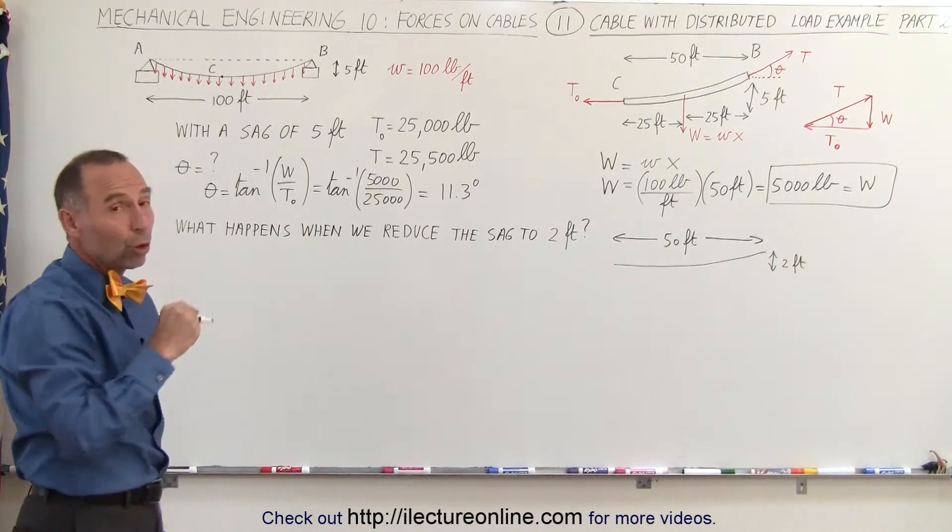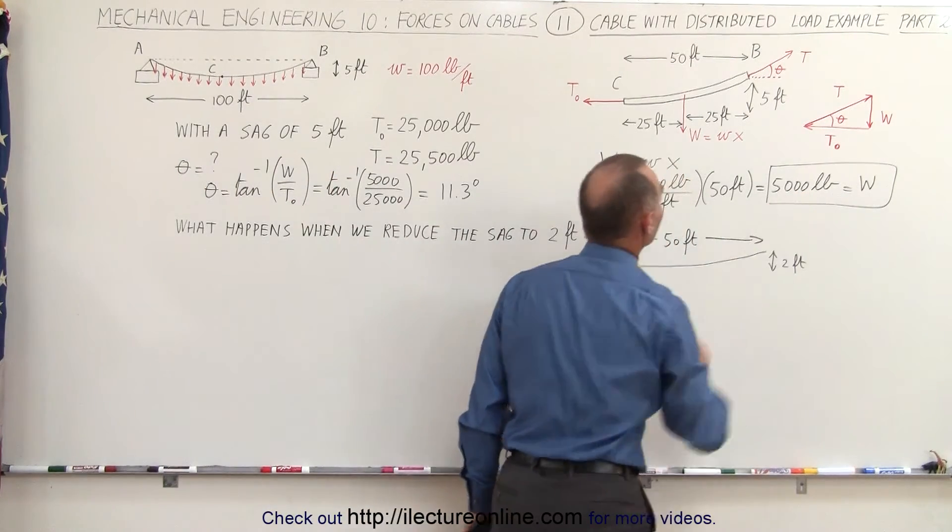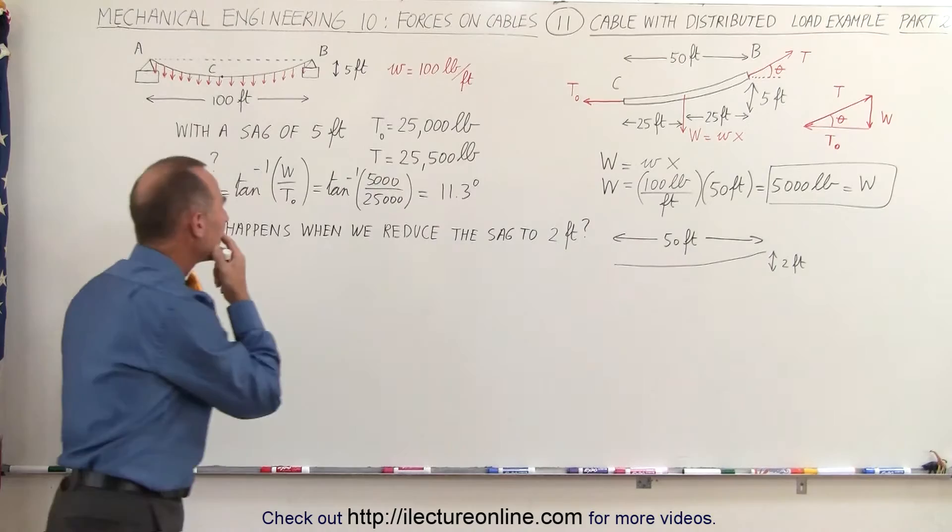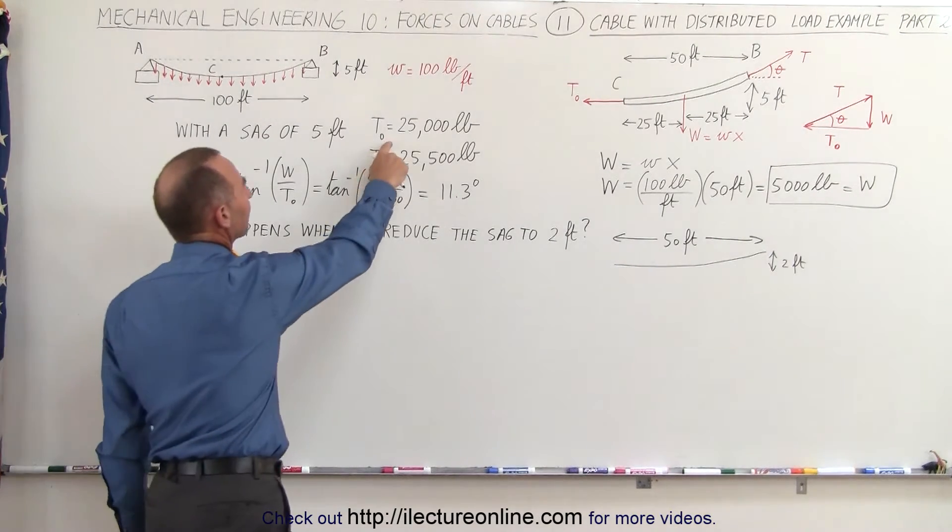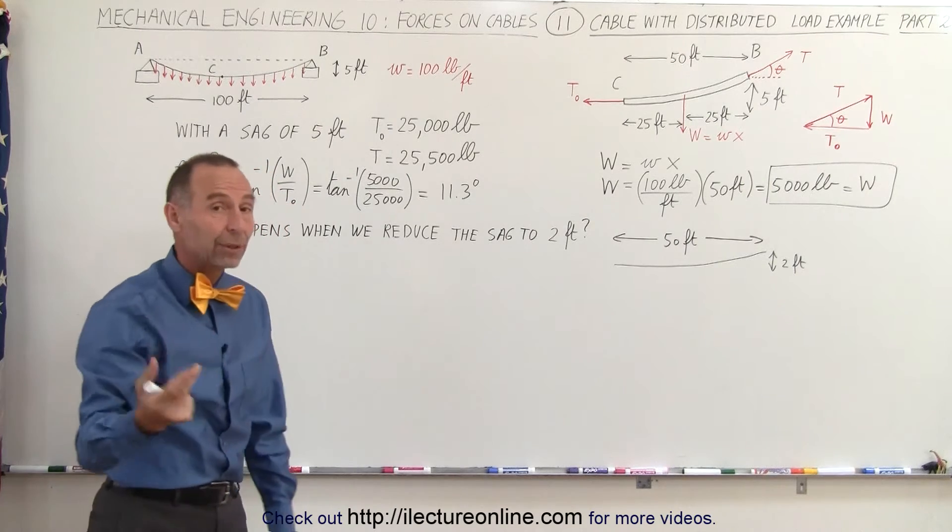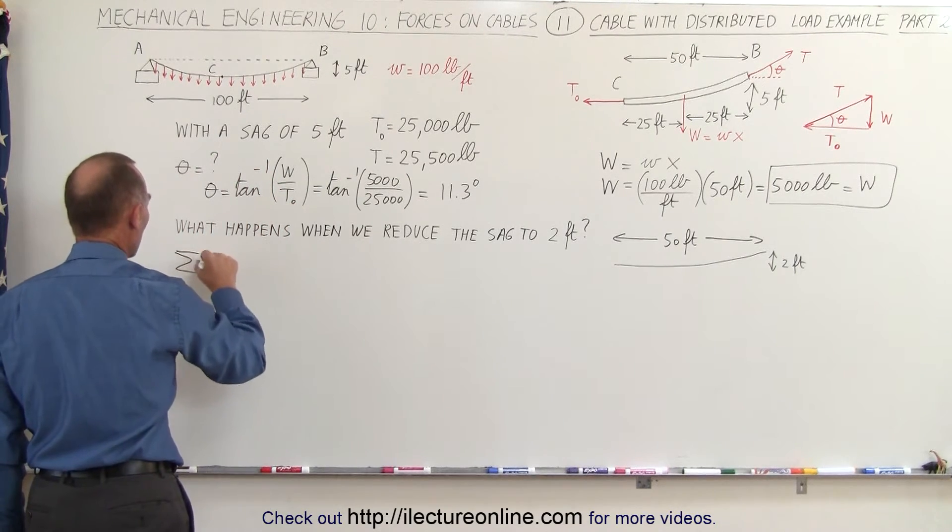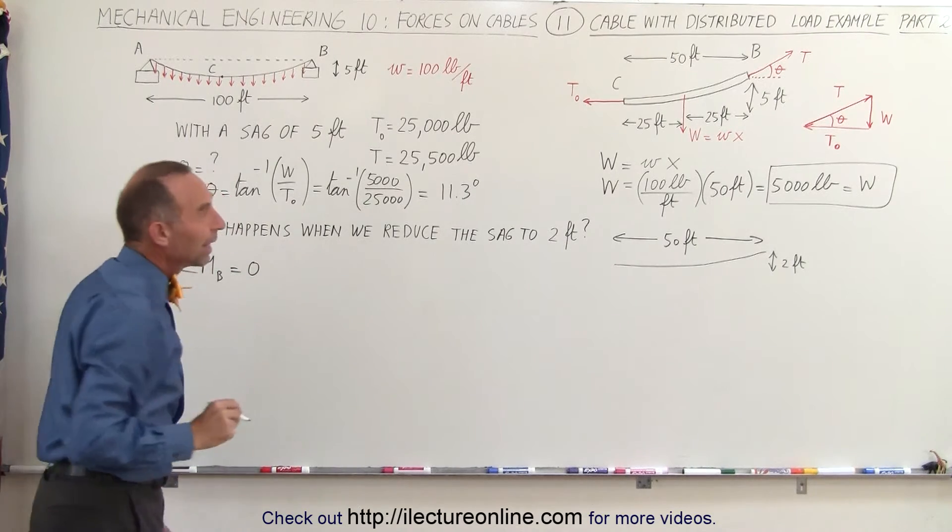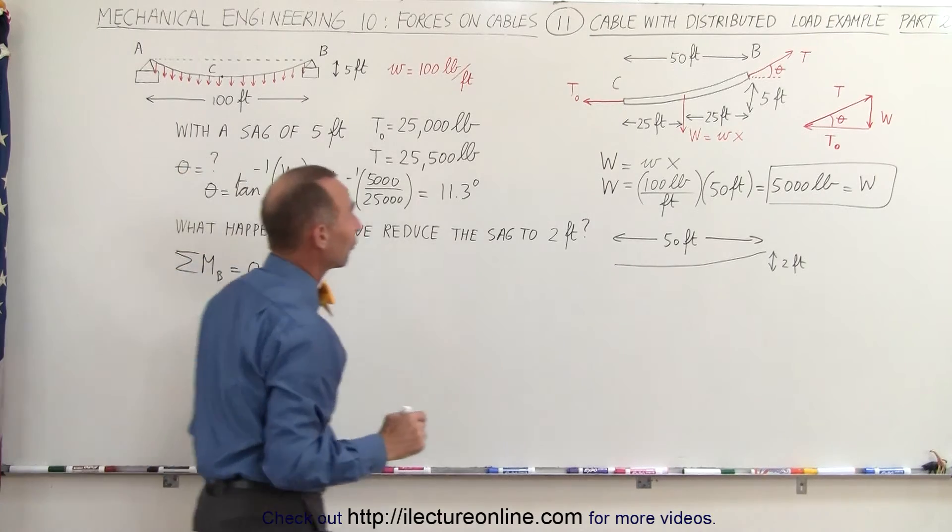Well, the total load on that cable will still be exactly the same. The total load on the cable will still be 5,000 pounds, but what would now be the tension T sub not? So what we're going to do is again like we did in the previous video, we're going to use the sum of the moments about point B is equal to zero, and let's add up all the moments that we have.